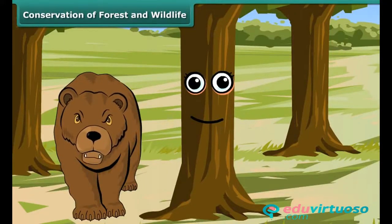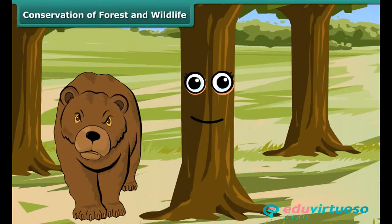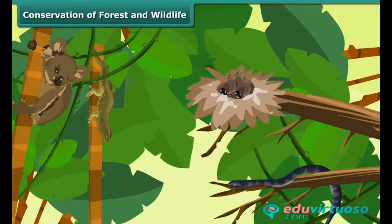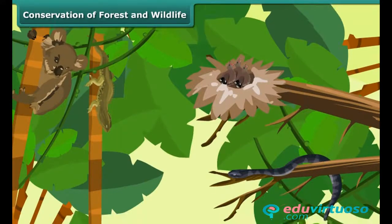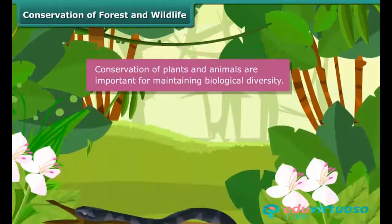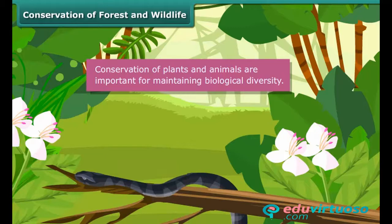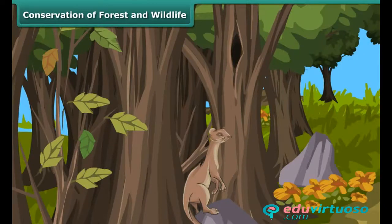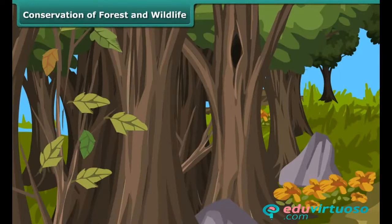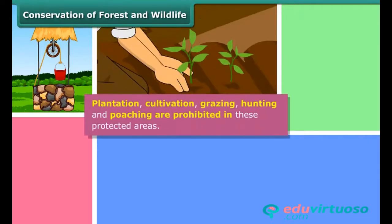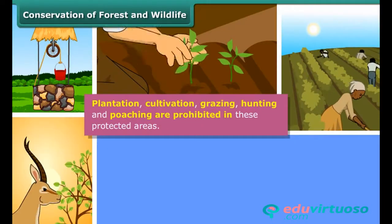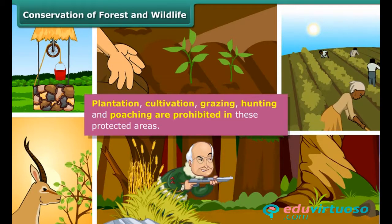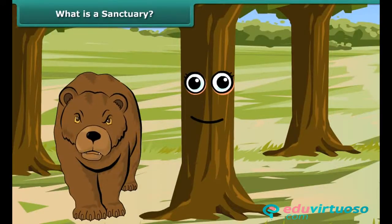You have become aware of the effects of deforestation, so now you can understand that there is a need to conserve the forests and wildlife. Moreover, plants and animals are needed for the sustained development of the Earth. Conservation of plants and animals is important for maintaining biological diversity, which is needed for the survival of humans. Plantation, cultivation, grazing, hunting and poaching are prohibited in these protected areas.